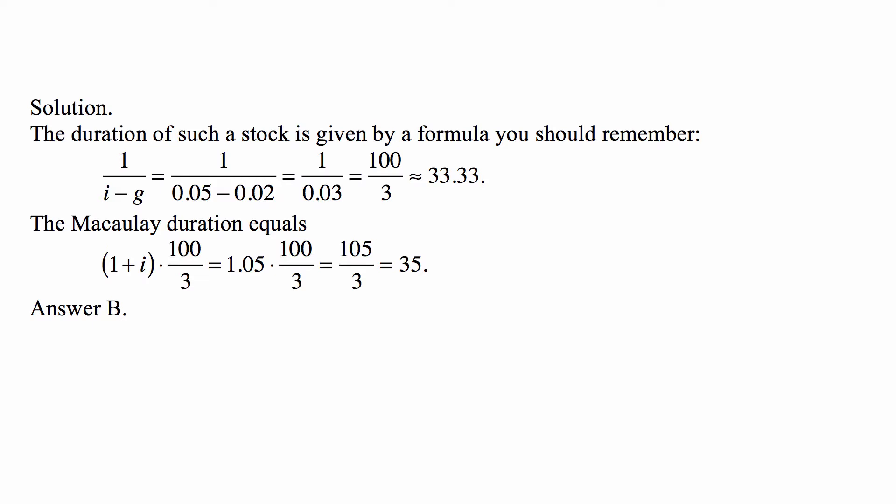So in this case it's 1 over 0.05 minus 0.02, so it's 1 over 0.03 or 100 over 3 or approximately 33.33 and exactly 33 and a third.